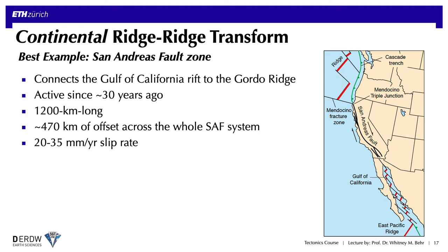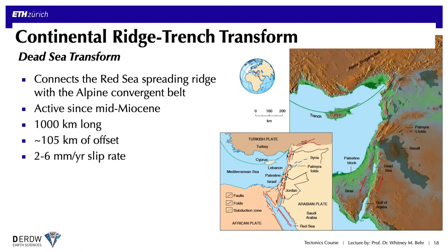The best example of a ridge-ridge transform on land is the San Andreas Fault in California, which connects the Gulf of California rift zone to the Gordo Ridge. It has been active since about 30 million years ago, is about 1,200 kilometers long with 470 kilometers of offset across the system, and has a slip rate of around 20 to 35 millimeters per year. Another example is the Dead Sea transform, a ridge-trench transform connecting the Red Sea spreading ridge with the Alpine convergence belt. Active since the mid-Miocene, it is about 1,000 kilometers long with roughly 105 kilometers of offset and a slower slip rate of two to six millimeters per year.